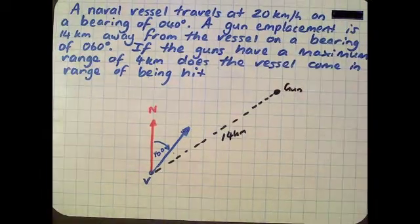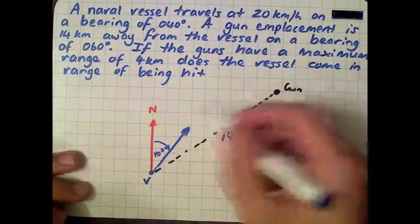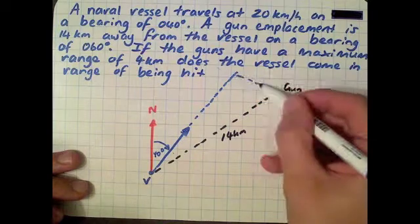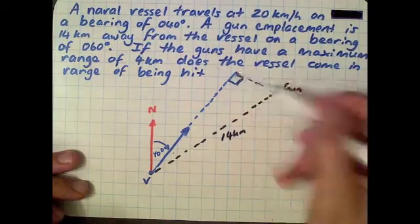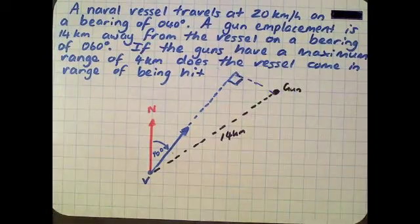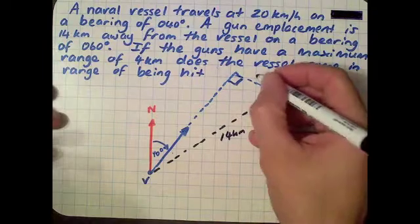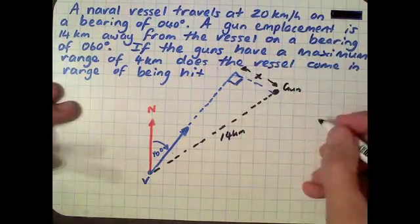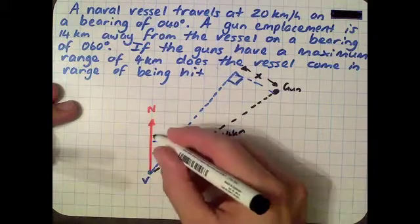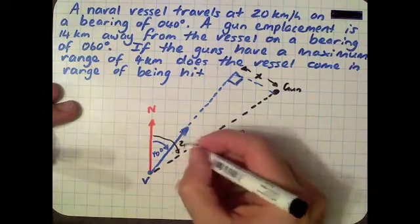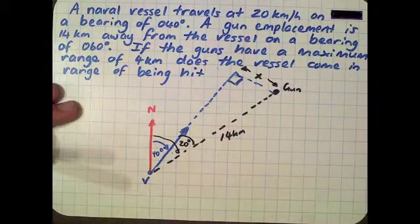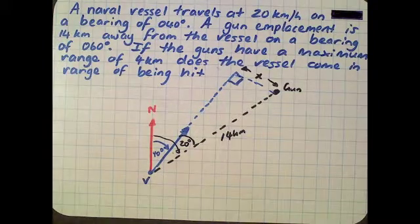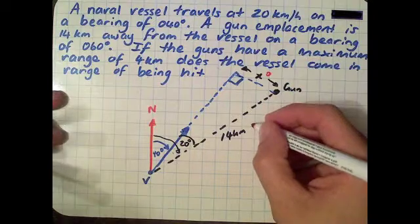Our vessel is traveling at 40 degrees, so it's going to continue on that path. We want to know the closest approach - that's when the line is perpendicular, at 90 degrees. If we can figure out that x there, that's going to tell us the distance the vessel is away from the gun. So there's our 60 degrees, which means we've got 20 degrees there. We've got a nice right angle triangle - we can use trigonometry.